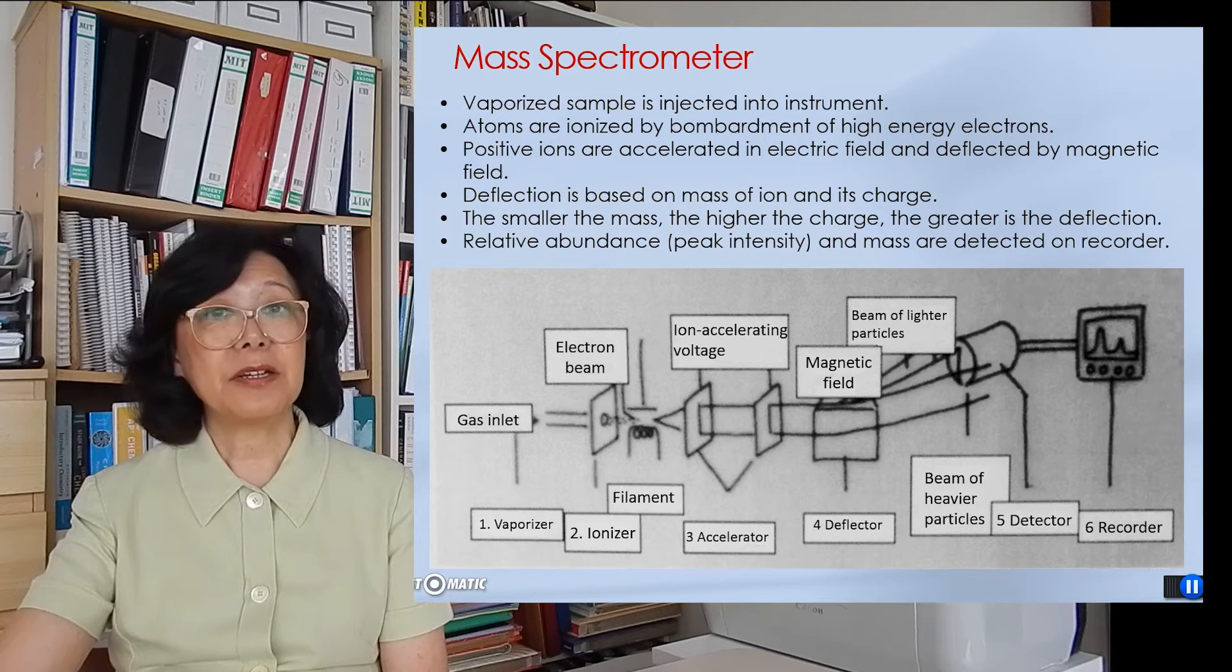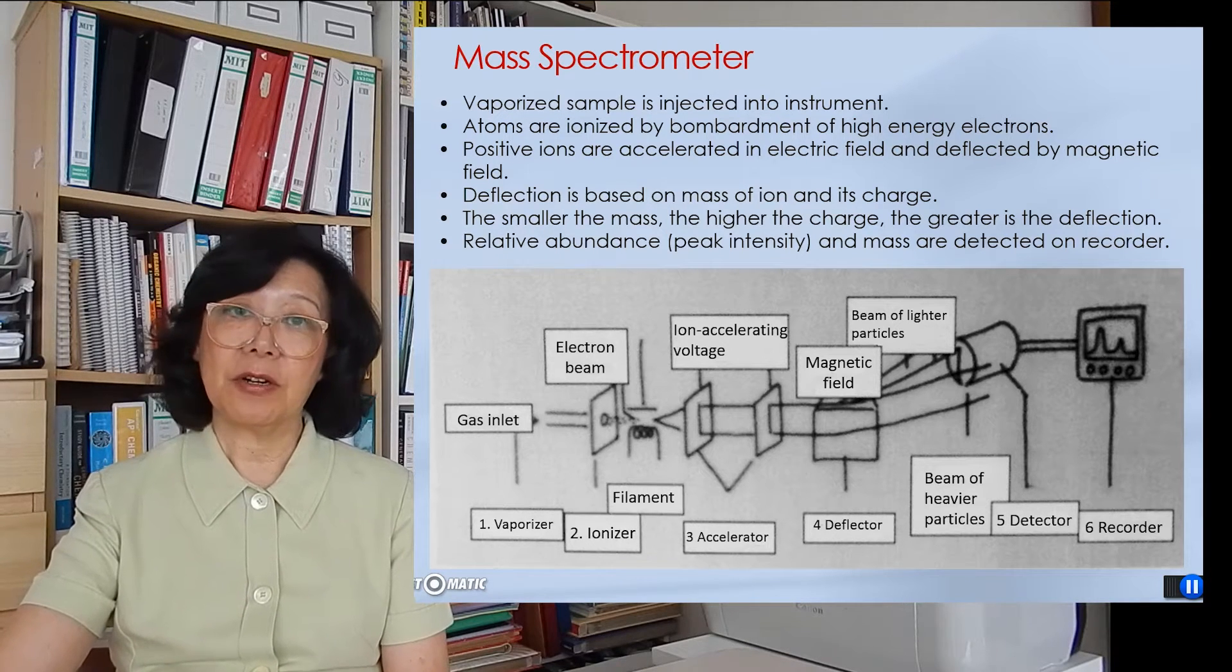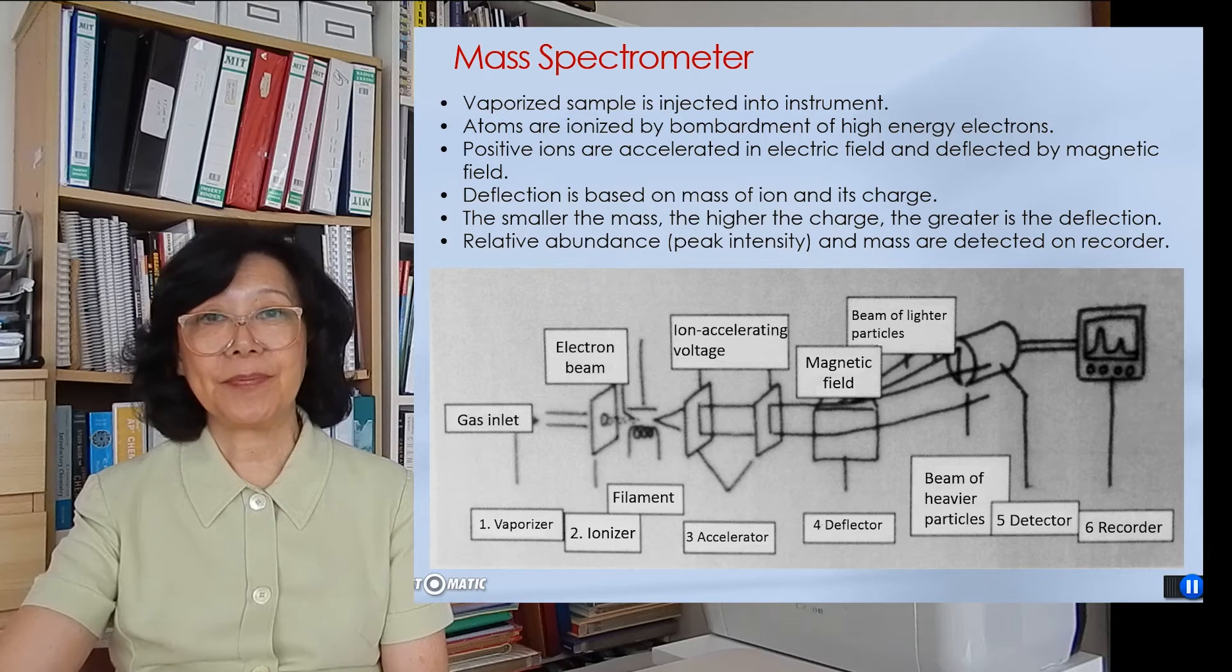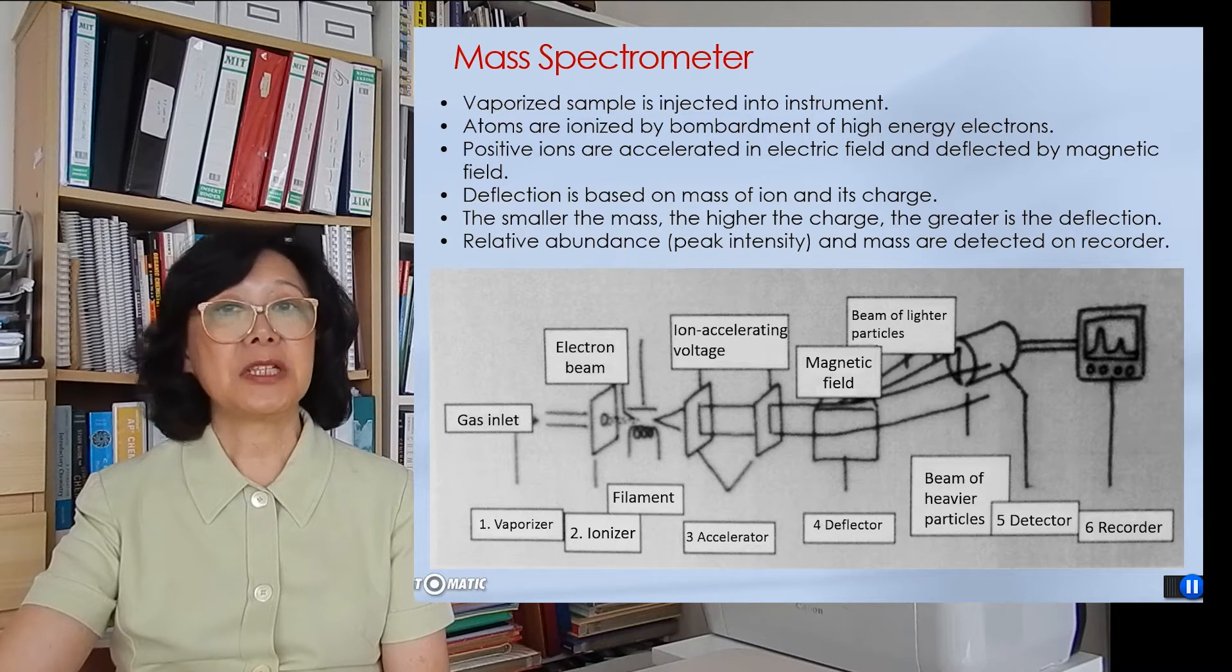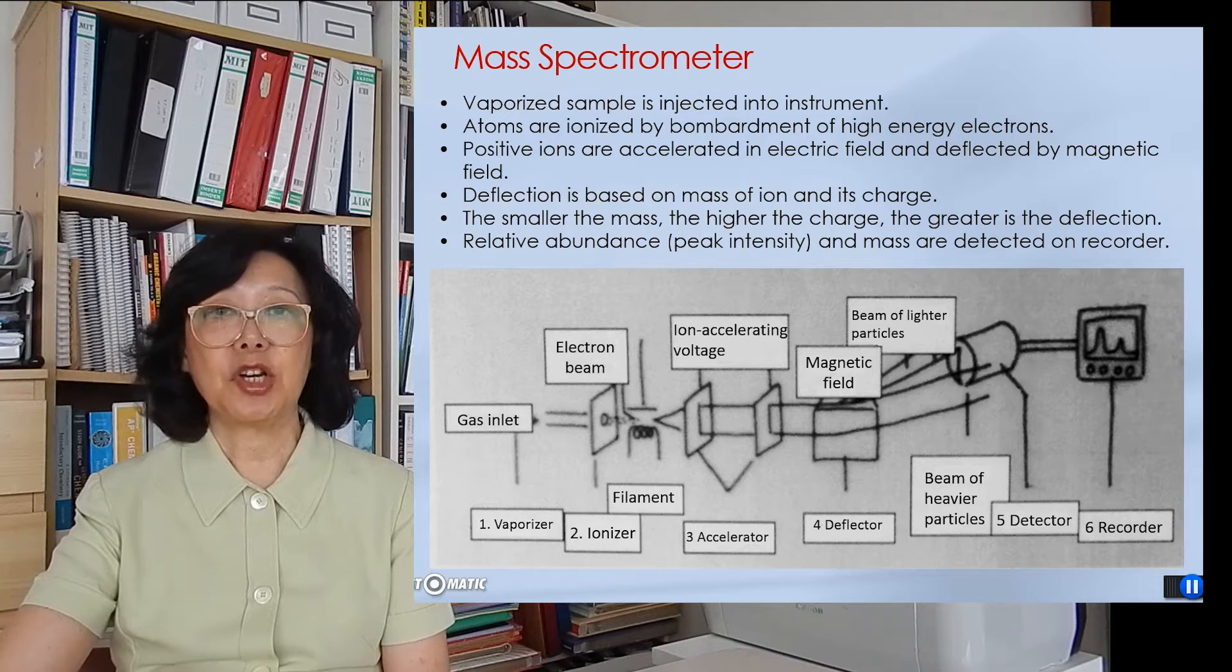Basically, the lighter the mass, the greater the charge, the greater is the bending. And the deflection is recorded on the recorder as peak intensity and atomic mass unit.